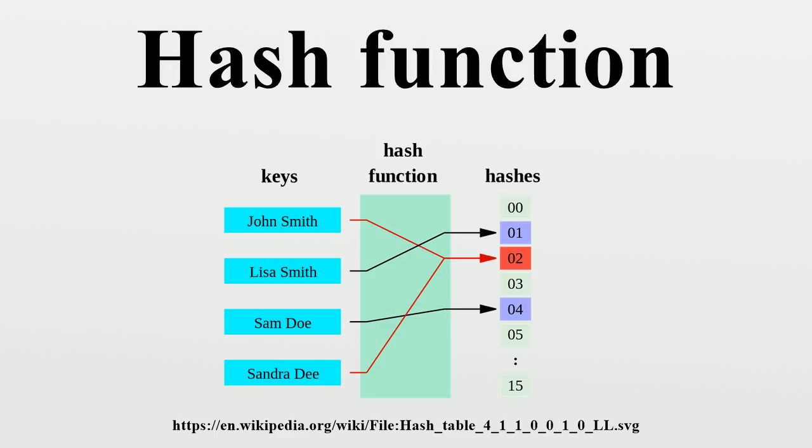In those situations, one needs a hash function which takes two parameters, the input data Z, and the number N of allowed hash values. A common solution is to compute a fixed hash function with a very large range, divide the result by N, and use the division's remainder.